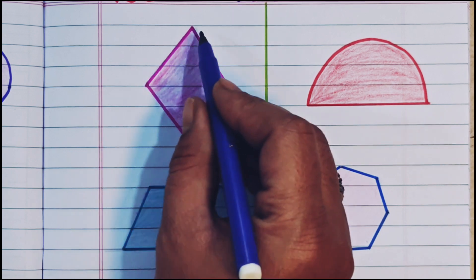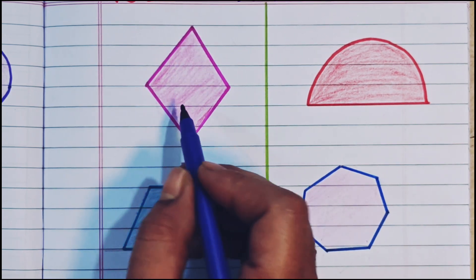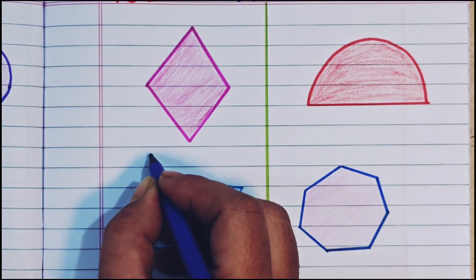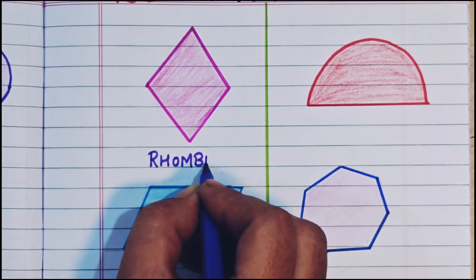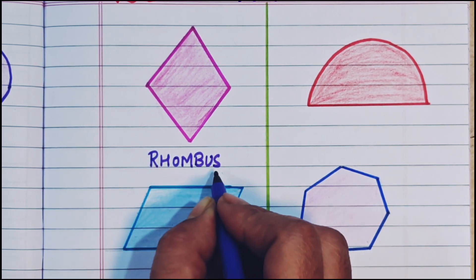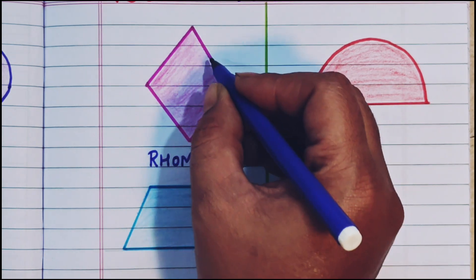Now this next shape. It looks like a diamond. This shape is called rhombus. R-H-O-M-B-U-S. Rhombus. It looks like a diamond.